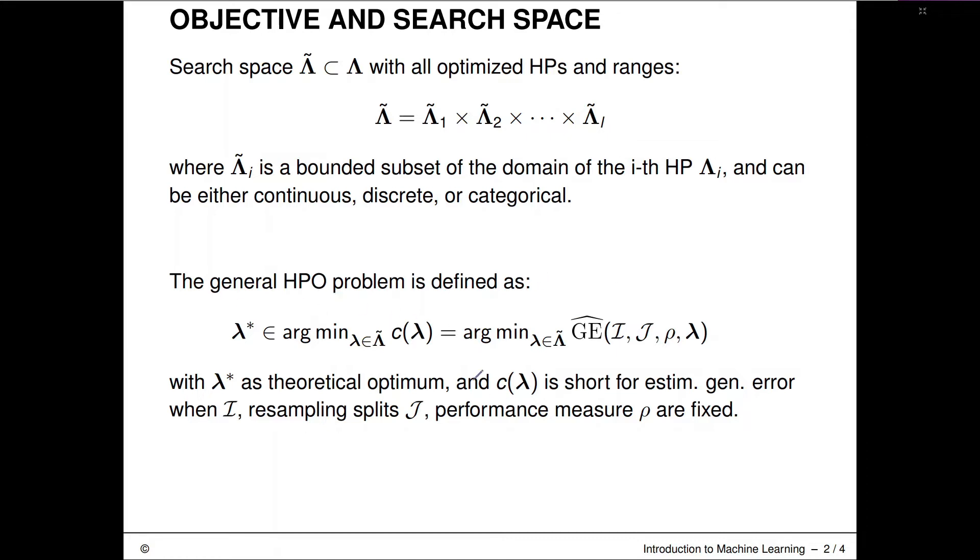And the general HPO problem is now simply defined as minimize this cost function here over the search space. And this cost function is simply the cross-validated error or the estimated generalization error when we cross-validate or resample our inducing algorithm I with a certain set of resampling splits, capital J, when we evaluate with a performance metric rho on some given data set D. And with Lambda star, I'll usually denote the theoretical optimum of the C function, of the true C objective function. And Lambda head would usually be our estimated Lambda vector, so the result of our tuning algorithm.